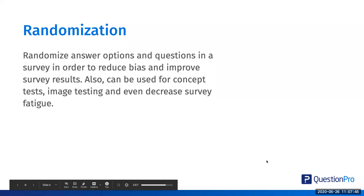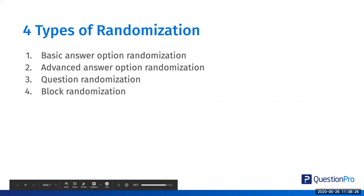Let's talk about randomization. You can randomize answer options and also randomize questions in the survey in order to reduce bias and improve results. These can also be used for things like concept testing, image testing, and even decrease survey fatigue, because if you have a long survey, you can route people through different channels, reducing the length and improving the overall time it takes to complete. The four types of randomization I want to cover today are: basic answer option randomization, advanced answer option randomization, question randomization, and block randomization.